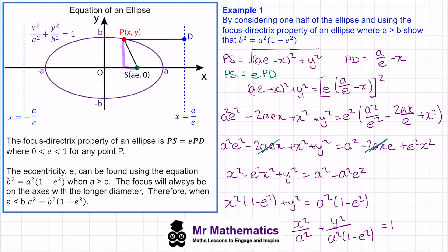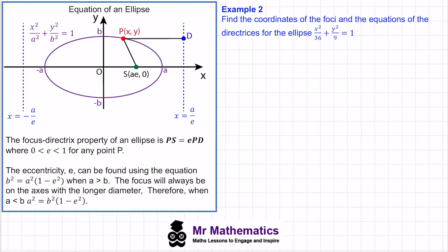In Example 2, we need to find the coordinates of the foci and the equations of the directrices. First, we consider whether to use b squared equals a squared(1 minus e squared) or the alternative form. Looking at the equation, a squared is 36 so a equals 6, and b squared is 9 so b equals 3.